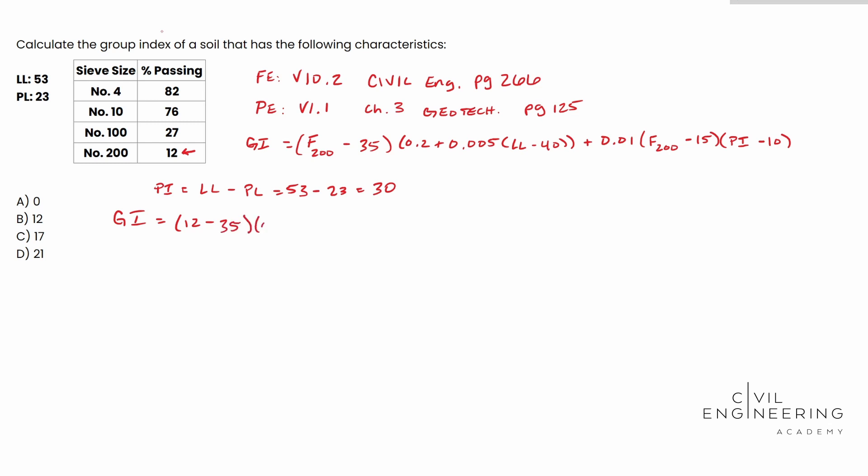And so with that said, our liquid limit is going to be 53. We're going to subtract 40 from that per the formula. And we add 0.01 and we multiply F200, that's going to be 12 minus 15. And we multiply the PI that we came up with, so 30 minus 10, and we actually end up with a negative number. You end up with negative 6.695. And so notice we end up with a negative. That's not really one of our answers, right?